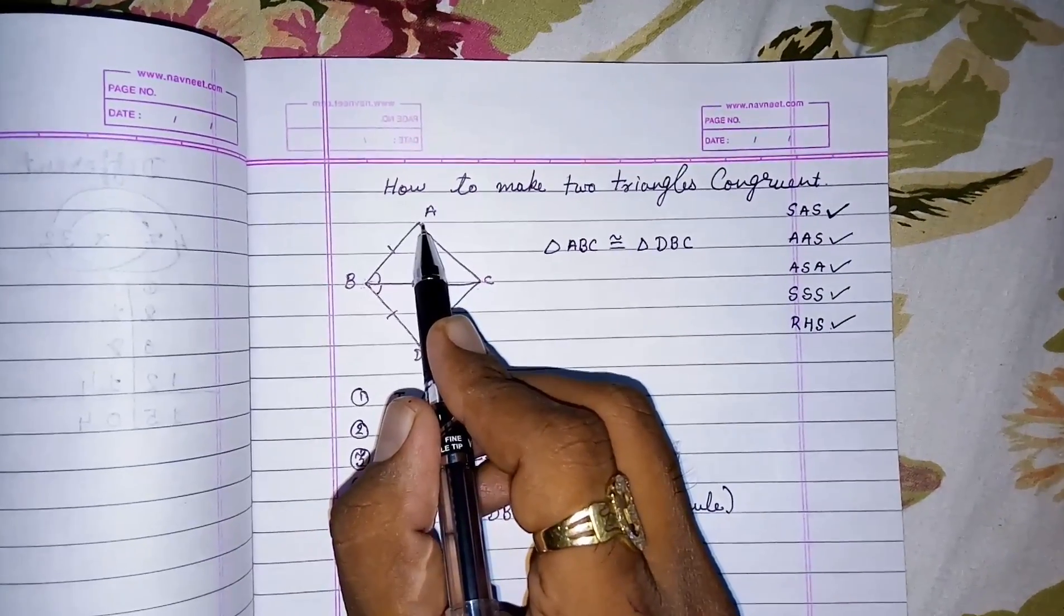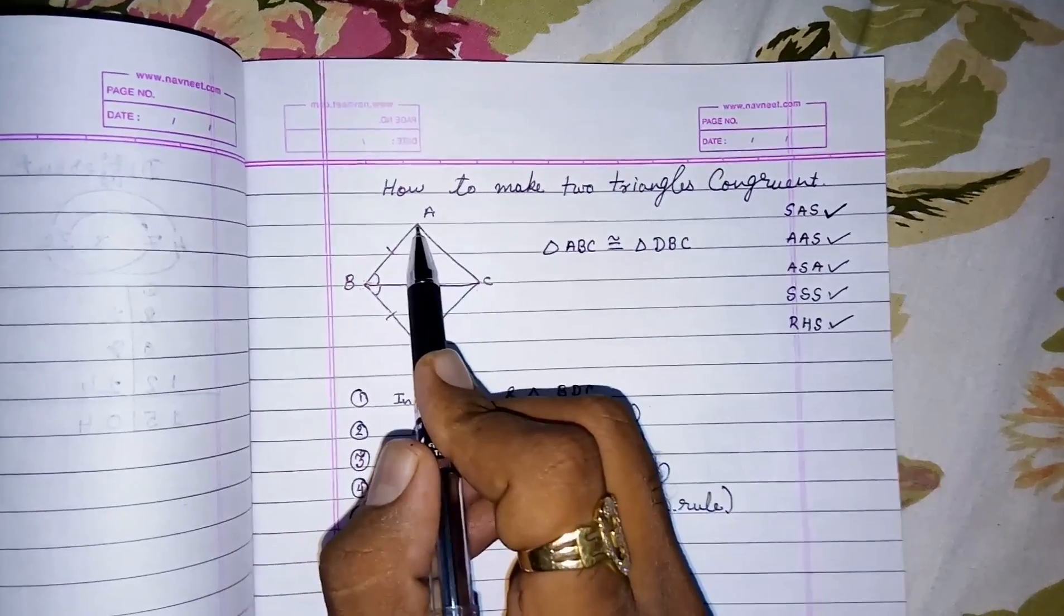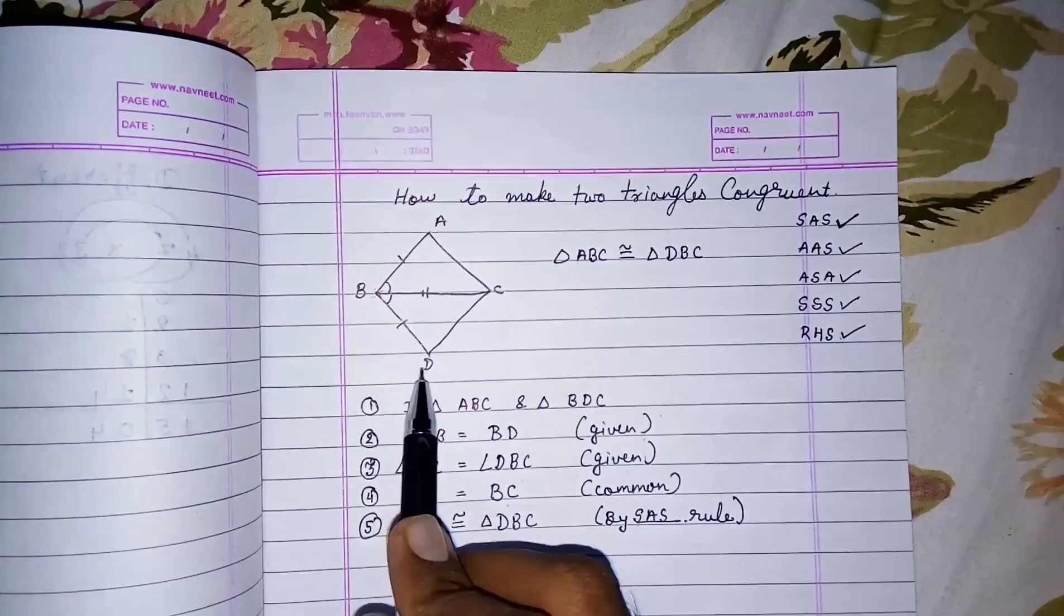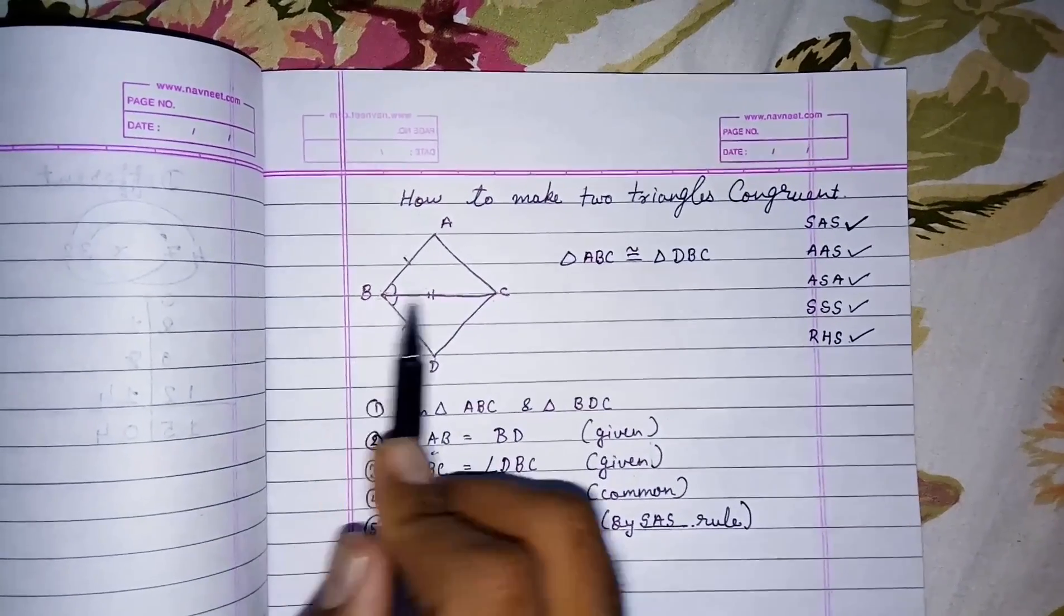The thing we have to keep in mind is that we have to select the same vertices. If I am writing triangle ABC congruent, then I have to write DBC only.